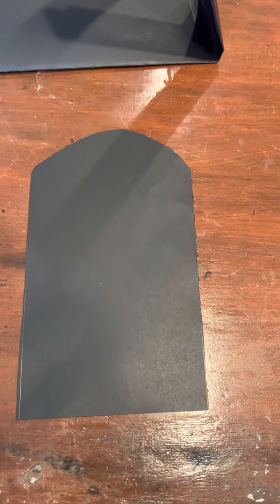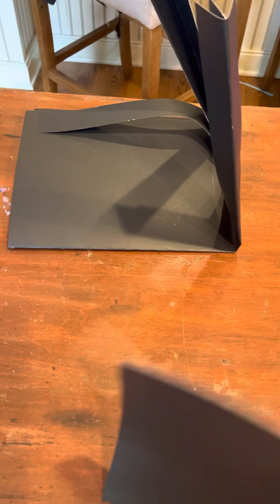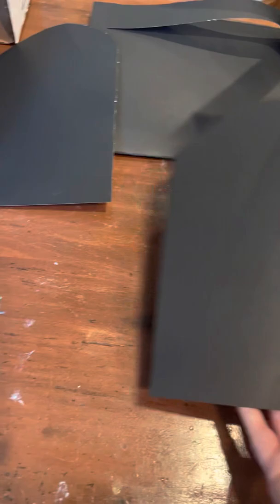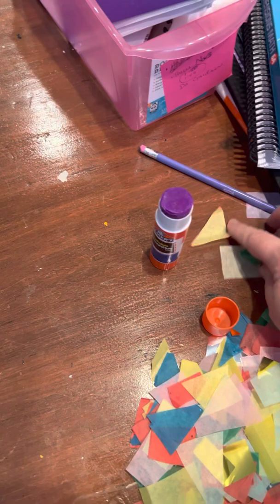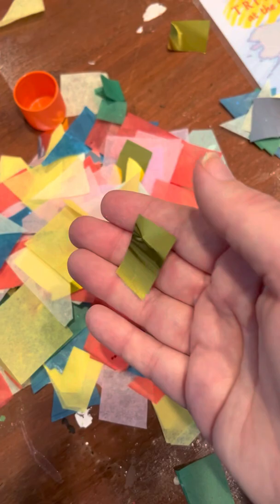These sheets are 79 cents each. I bought just a bunch of tissue paper. Again, if you have tissue paper at home, just use what you have. I'm just cutting it up into squares. Ellie thought it would be fun to add some foil types.